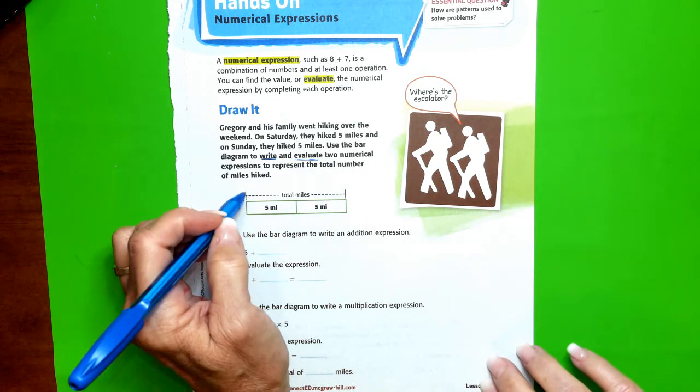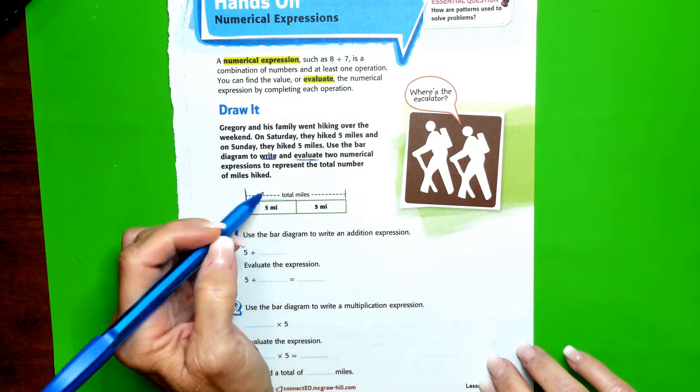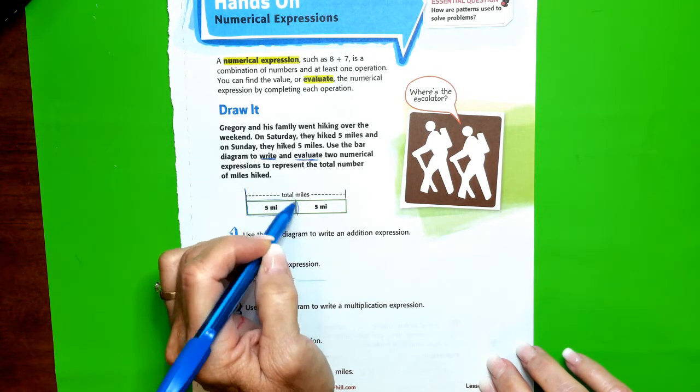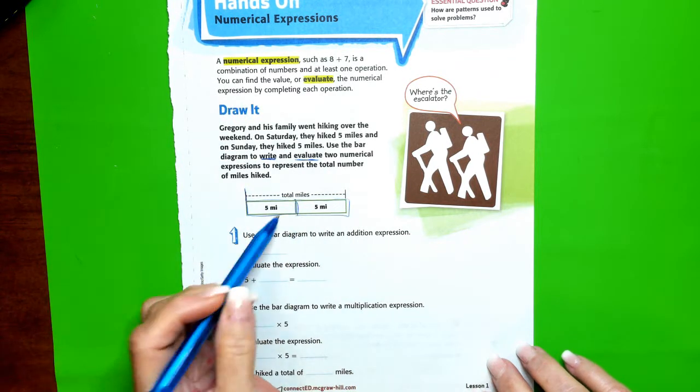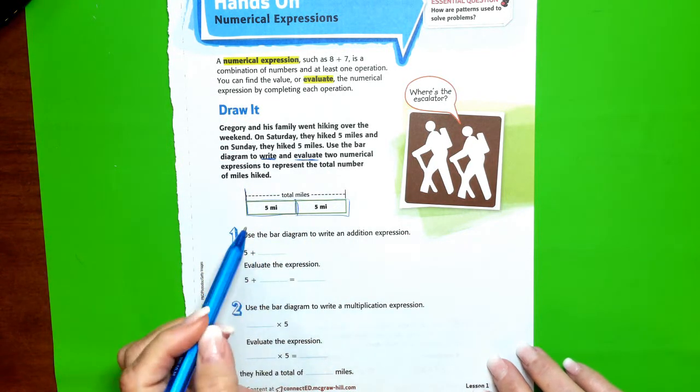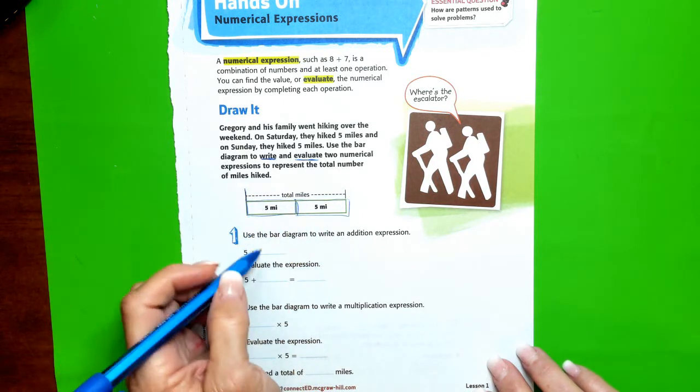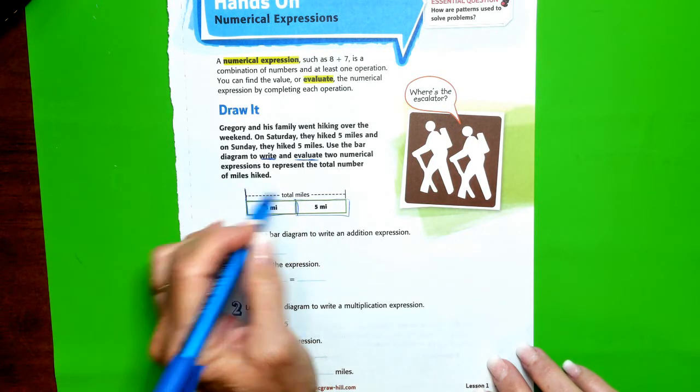You can see that they made a bar diagram to write an addition expression. Total miles is unknown.